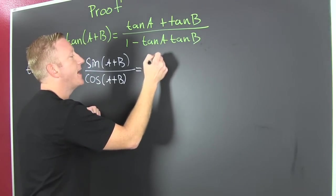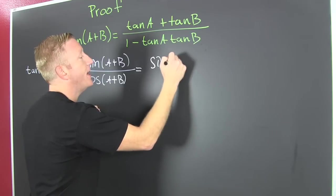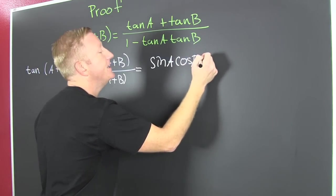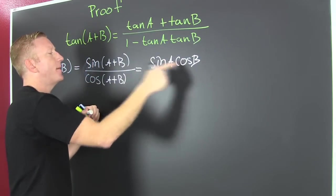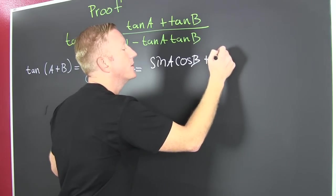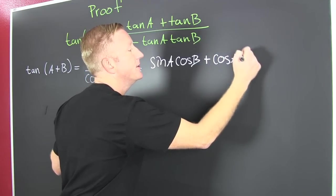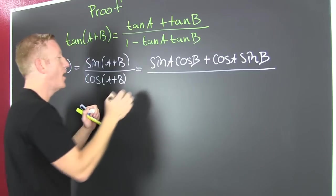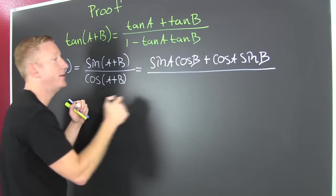Now we go and we write those out. This is the sine of A, the cosine of B, and then these are opposites. So the signs are the same and this is plus. The cosine of A, the sine of B.